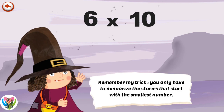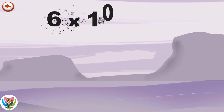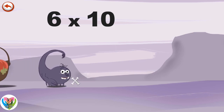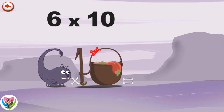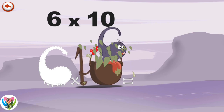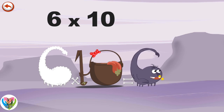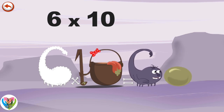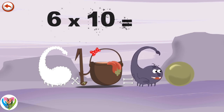Remember my trick. You only have to memorise the stories that start with the smallest number. What's the story of 6 times 10? When Scorpie 6 meets the potion Magi 10, it makes him very, very hungry. He dives headfirst into the cauldron and comes out feeling very full. He gives an enormous magic burp and blows a bubble in the shape of a zero. 6 times 10 is 60.